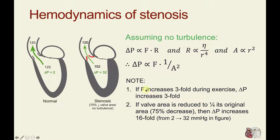If flow were to increase three-fold across the valve — which occurs during exercise — then delta P would also increase three-fold. Now, if the valve orifice area is reduced to one-fourth its original area, that is a 75% decrease, then delta P increases 16-fold, from 2 to 32 millimeters of mercury, because delta P is inversely related to the valve area squared.